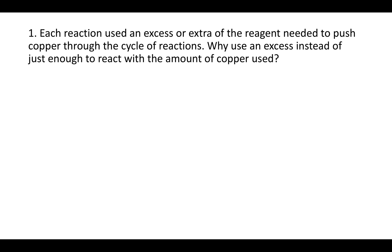Here's some help with the Experiment 7 post lab. Question 1 says each reaction used in excess or extra of the reagent needed to push copper through the cycle of reactions. Why use in excess instead of just enough to react with the amount of copper used?